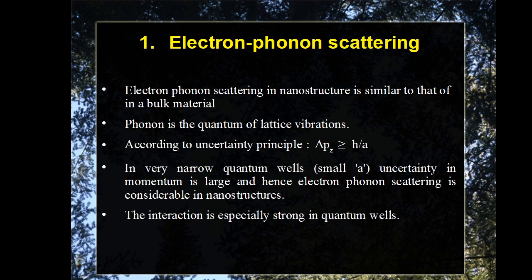According to the uncertainty principle, the change in momentum delta p is greater than or equal to h/a, where a is the width of the two-dimensional quantum well. In 2D quantum wells, the width a is very small — less than 50 nanometers. When the quantum well is made thinner, a decreases, so delta p increases. When the change in momentum increases, the probability of collision increases, meaning scattering increases. The interaction is especially strong in two-dimensional quantum wells.